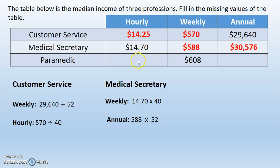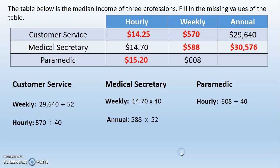Now let's work with the paramedic. We're going to go both directions. Going from weekly to hourly, that's dividing by 40, so it's $15.20. Then going from weekly to the annual — which is one year — we multiply by 52 weeks and get $31,616.